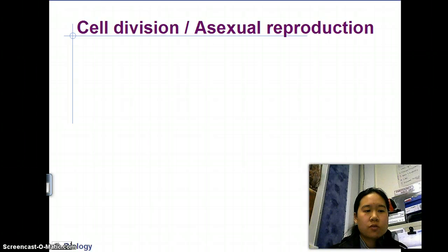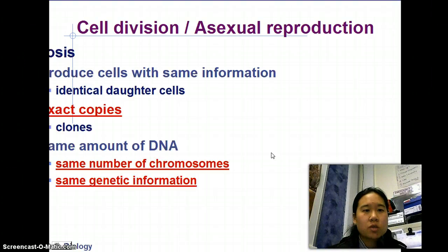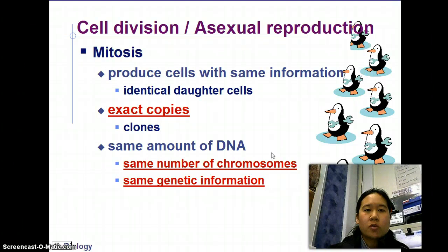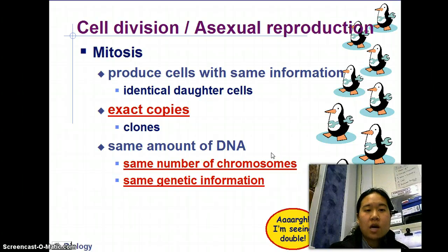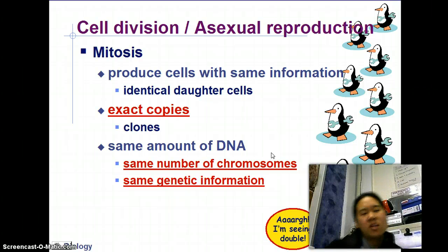First off, why do we have meiosis? Why sex? You don't want to have asexual reproduction. Asexual reproduction is basically the same as mitosis — you're producing cells with the same information, just copying the same exact thing, or clones. This happens with jellyfish, sea anemones, bacteria. That's not what we want in meiosis. In meiosis, we want something new, something novel, something exciting.